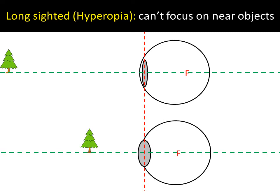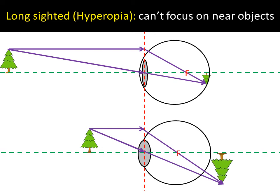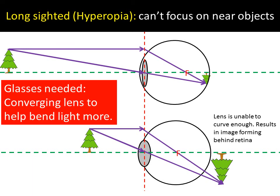Long-sightedness is the opposite — it means you can't focus on near objects. A far object is no problem at all, but a near object causes difficulty. The lens can't get fat enough, so it can't move the focal point close enough. What ends up happening is the image is produced behind the eye, so no clear image is formed. All we see is what hits the retina and that's a blurry image, because the two ray lines don't meet on the retina. So we need the ray lines to converge, and we put a converging lens in front in our glasses.